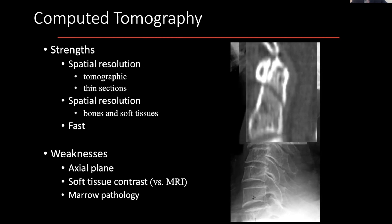Soft tissue is not seen as well on CT, but certainly better than on a plain film. CT is again widely available — most of you will have a CT scanner available in or immediately adjacent to your emergency room, and similarly adjacent to the OR. It's very accessible, very quick, and has very few limitations compared to MRI.